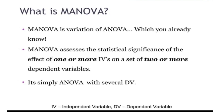IV means independent variable and DV means dependent variable. MANOVA is simply ANOVA with several dependent variables. The difference is you are going to assess one or more independent variables with two or more dependent variables.